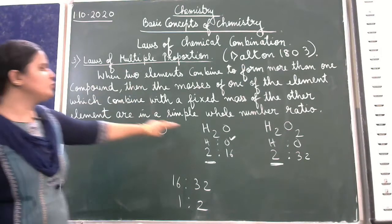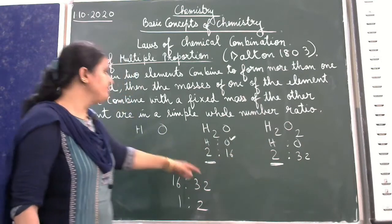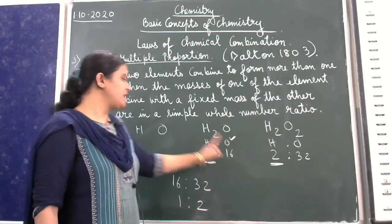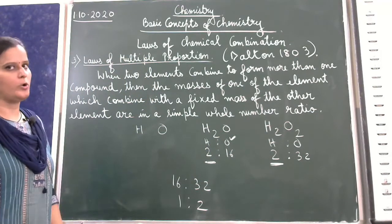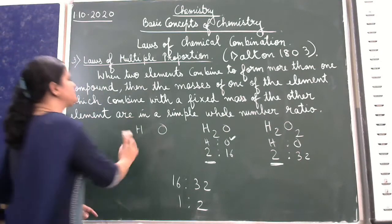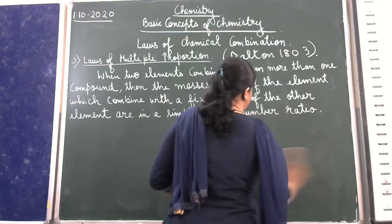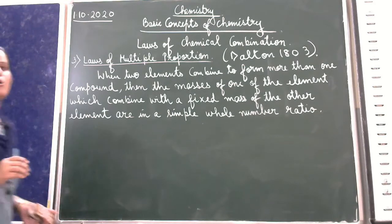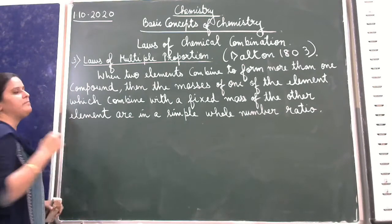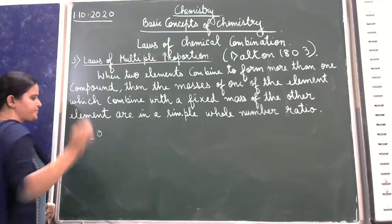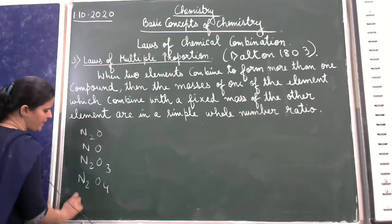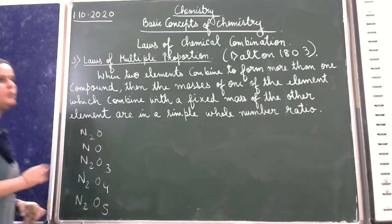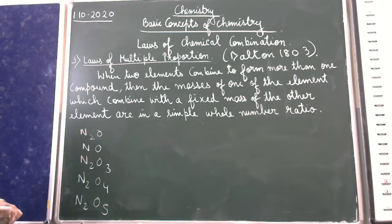To summarize the statement: if two elements can form more than one compound, then the mass of one element combining with the fixed mass of another element will have a simple whole number ratio. Now let me take the example of nitrogen oxides — N₂O, NO, N₂O₃, N₂O₄, and N₂O₅ — these are the different compounds of nitrogen and oxygen.